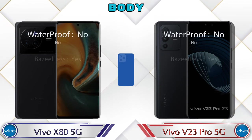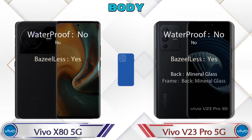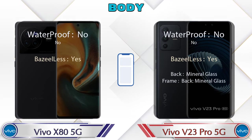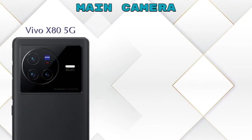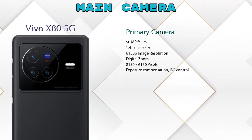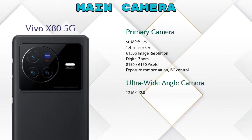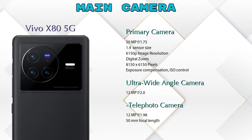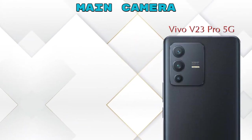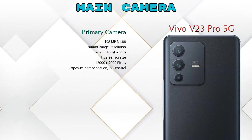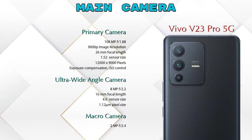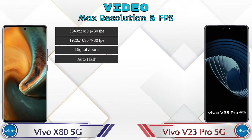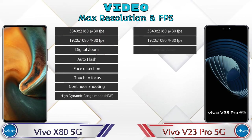Now let's see the details about the cameras. For the rear camera, the Vivo X8 5G has three cameras: a primary camera, an ultra-wide angle camera, and a telephoto camera. The V23 Pro 5G also has three cameras: a primary camera, an ultra-wide angle camera, and a macro camera. For video, both phones offer eight different types of video features.